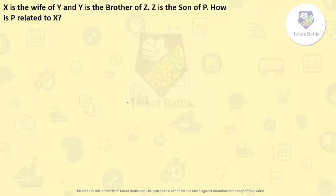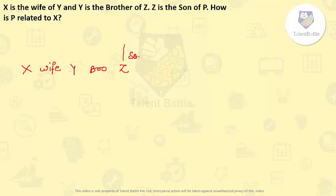Next problem: X is wife of Y, and Y is brother of Z. Z is son of P. How is P related to X? Let us write down the given relationships: X is wife of Y, Y is brother of Z, Z is son of P.